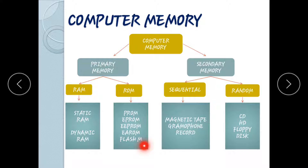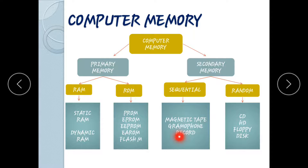Secondary memory includes sequential memory and random access memory. Sequential memory — like magnetic tape — means data must be accessed in order, similar to a gramophone record.